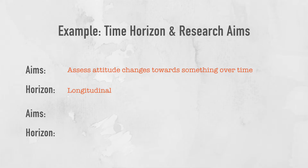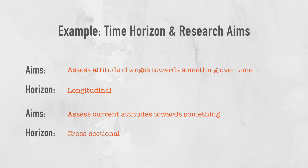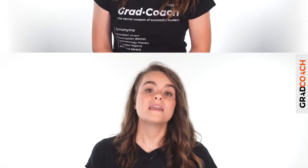Conversely, if your research aims are interested in the current attitudes towards something, a cross-sectional approach would likely be the best choice. As you can see, it is about adopting a time horizon that aligns with your broader research aims — using the most suitable tool for the job.